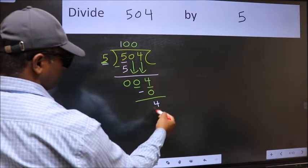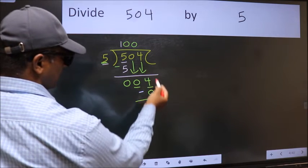So what we should do is we should take 0. So 5 into 0, 0. Now we should subtract 4 minus 0, 4. Over here we did not bring any number down, and 4 is smaller than 5. So now we can put dot and take 0.